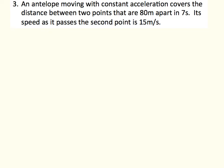Now for the last problem: an antelope moving at constant acceleration covers the distance between two points 80 meters apart in 7 seconds, and its speed as it passes the second point is 15 meters per second. This is the most difficult one. Unlike the others, we can't assume v₀ = 0 — the antelope is already running. Let's define the direction the antelope is running as positive.